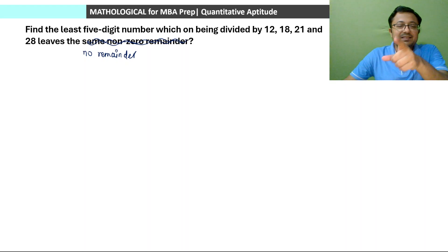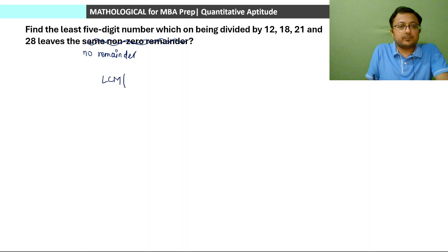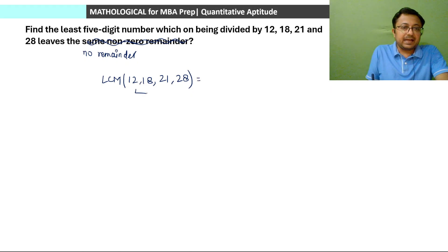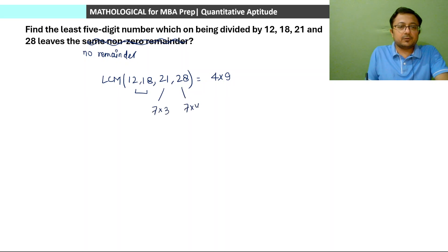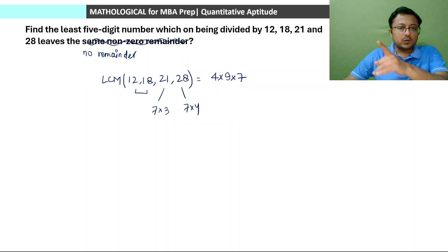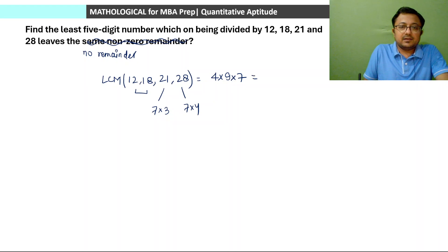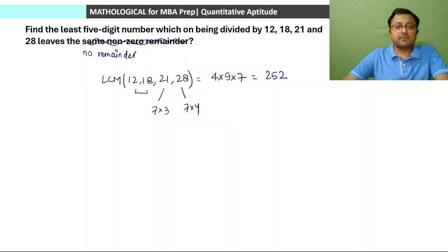First, find the LCM of 12, 18, 21 and 28. LCM of 12 and 18 is 36. 21 is 7 × 3, and 28 is 7 × 4, so there is one extra factor of 7 to multiply in. LCM = 4 × 9 × 7 = 252. This is the LCM of all four numbers.